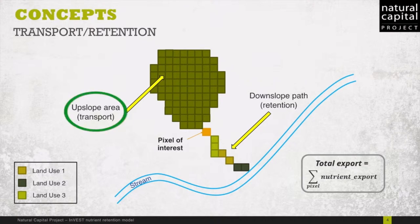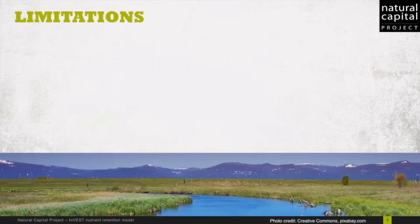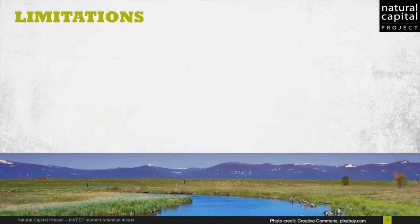First, the upslope area, which looks at the flow and the amount of energy available to transport nutrients from the pixel of interest to the stream. And also the downslope component — this second component looks at the potential for areas on the downstream flow path to retain nutrients before it reaches the stream. This depends on the distance, the slope, or the retention capacity, say of a natural forest as opposed to bare soil.